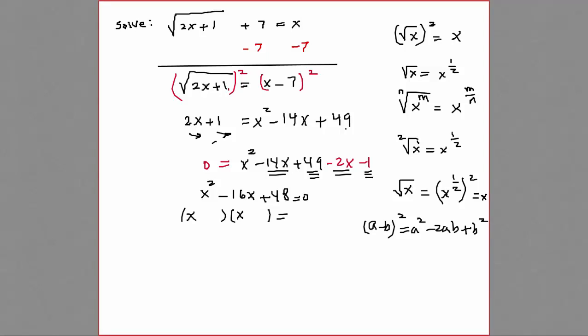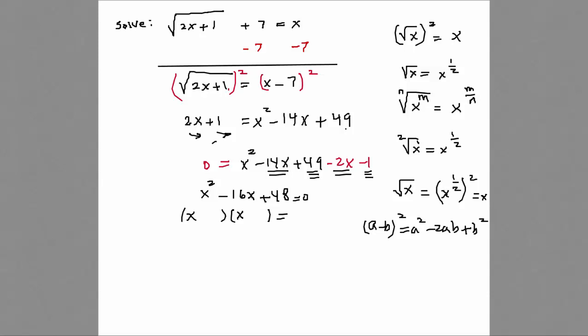So here we have 4x, here we have 12x. In order to get minus 16 out of that, both have to be minus. And minus 4 times minus 12 is plus 48. So we get two solutions. X minus 4 is equal to 0, so x is equal to 4. Or x minus 12 is equal to 0, x is equal to 12.